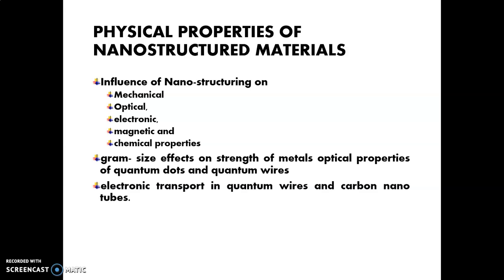The size effect will be varying. When you are varying the size, we will get different strength, as we already saw in the previous units, as well as the optical properties. Optical properties depend upon quantum dots and quantum wires. When you are varying the sizes of quantum dots, you will get various types of optical properties as well as colors. That will be used in electrical applications as well as semiconductor optical applications.